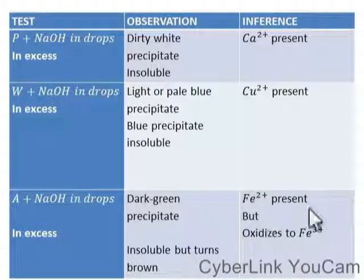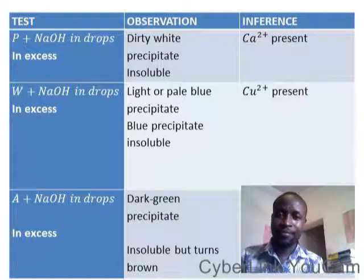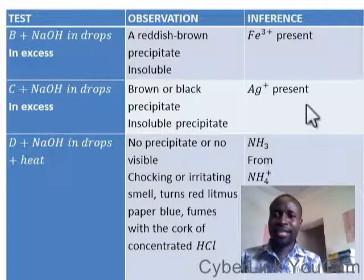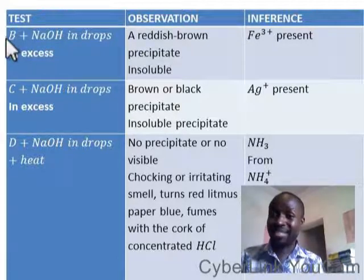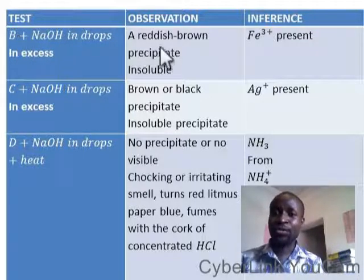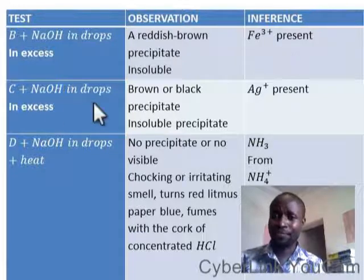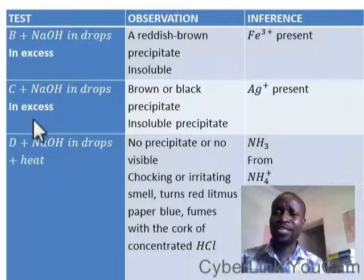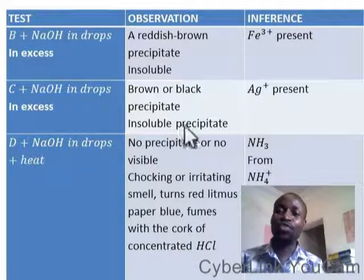Take another example: compound B. If you add sodium hydroxide to any sample given to you and you have a reddish brown precipitate which is insoluble in excess, you are talking about iron(III) — Fe³⁺. For sample C plus sodium hydroxide in drops and in excess: if it is a brown or black precipitate insoluble in excess, we are talking about silver.